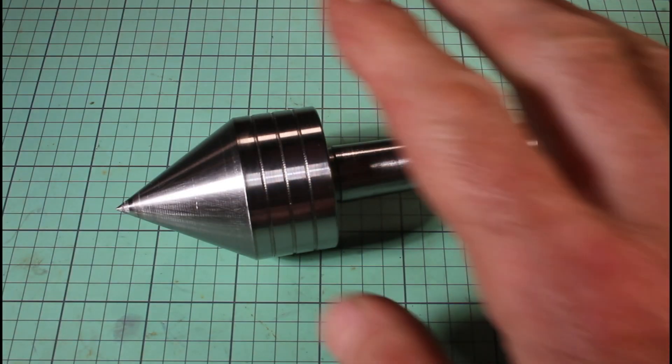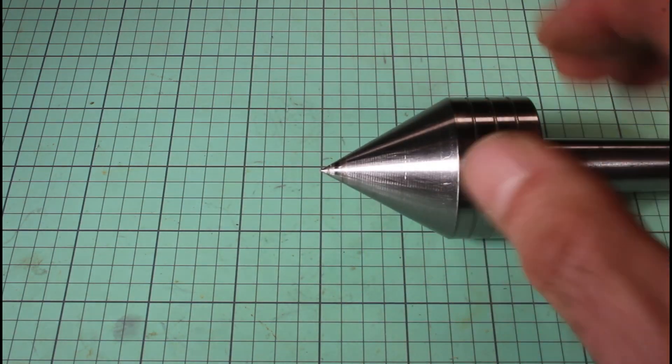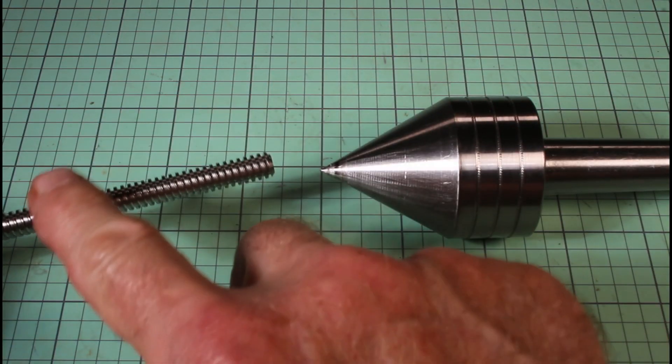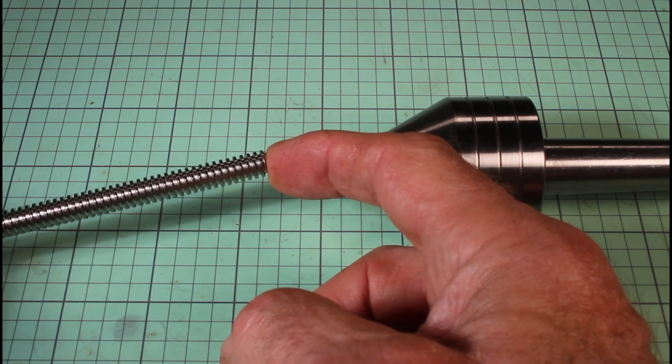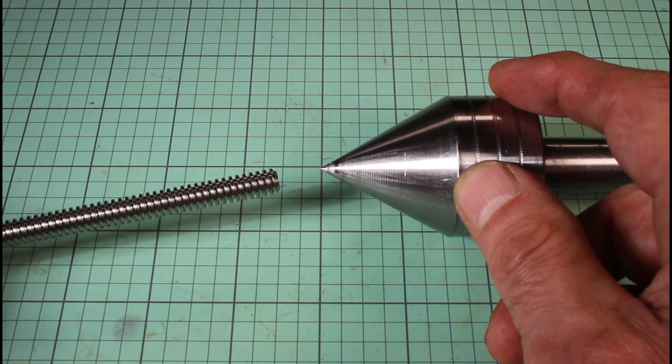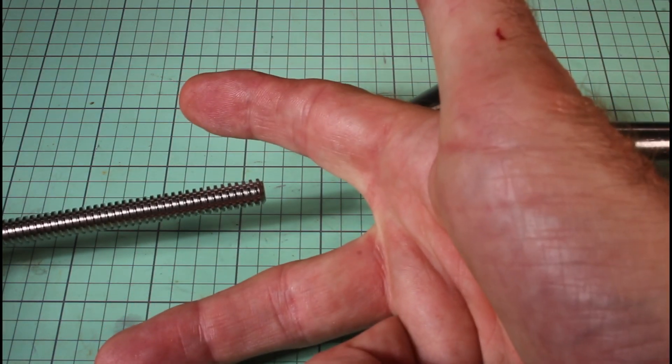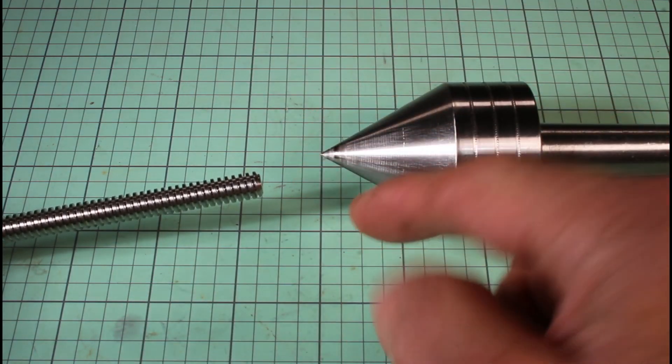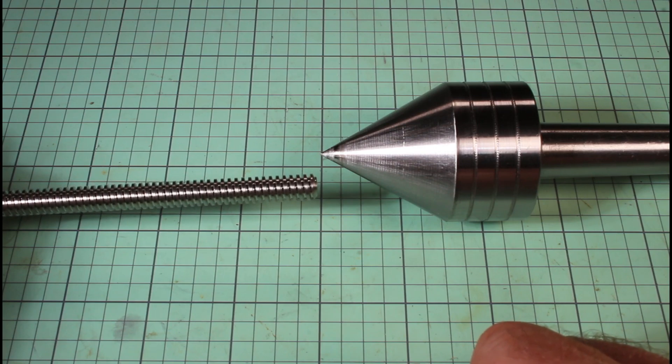So a nice precision live center like this is a very useful tool, but there are some situations where you might have a piece of work that you don't want to put a hole in for whatever reason, but you want to be able to capture it at the far end on the tailstock and center it with a live center. So what you're going to need is an inverse live center. In other words, not a pointy cone but a hollow cone like that. And that's what we're going to talk about today.